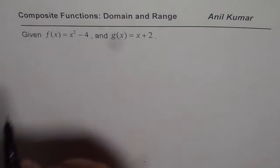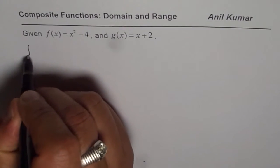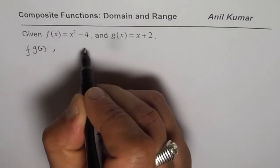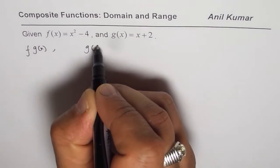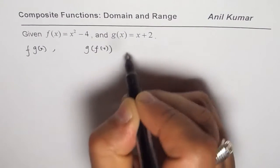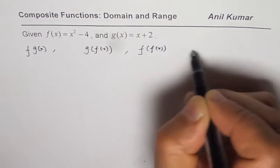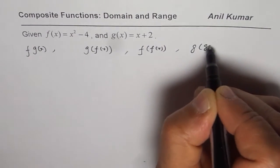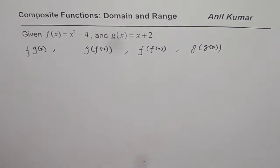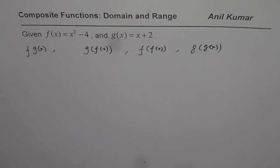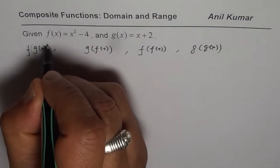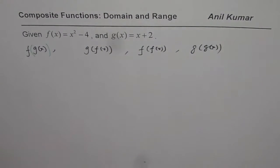When we say composition of functions, the functions could be f of g of x, it could be g of f of x, and it could be f of f of x or g of g of x. These are all composition of functions. In this particular video we'll consider the first two. Now let us find what is f of g of x.